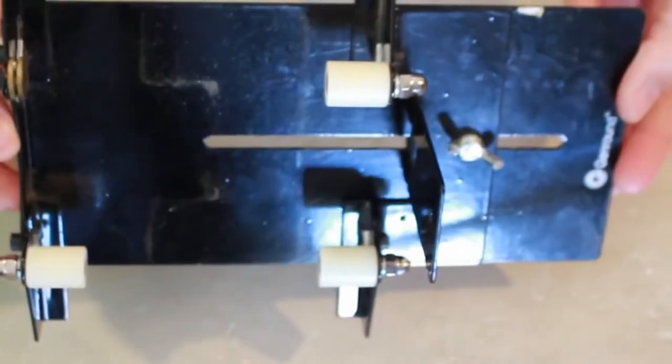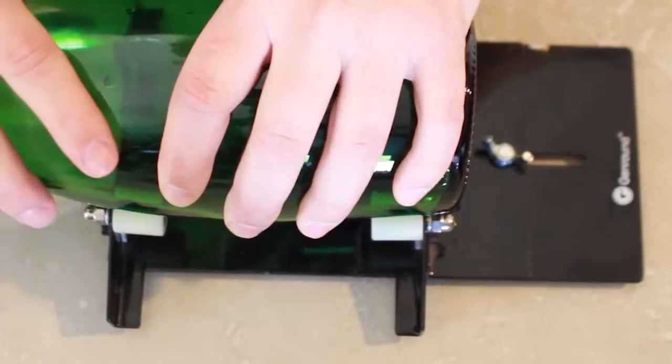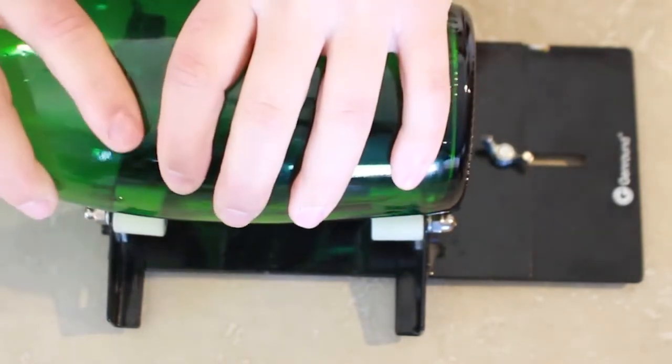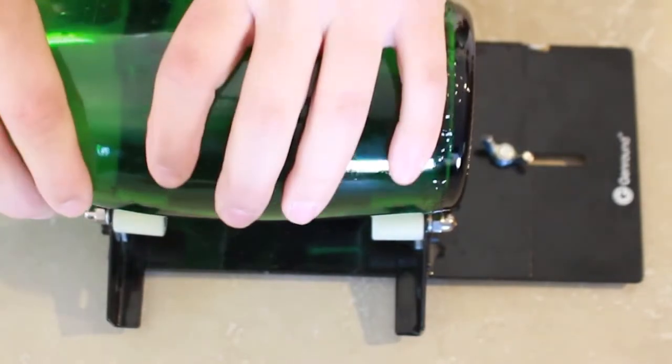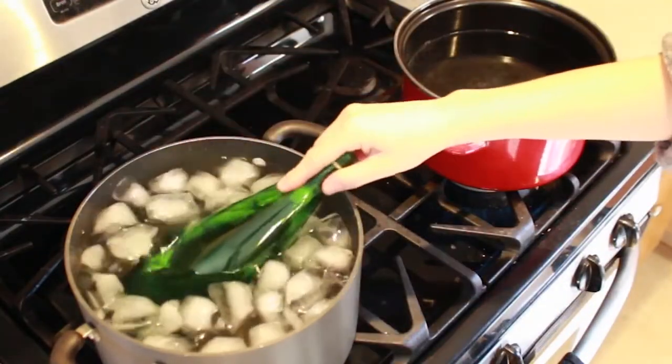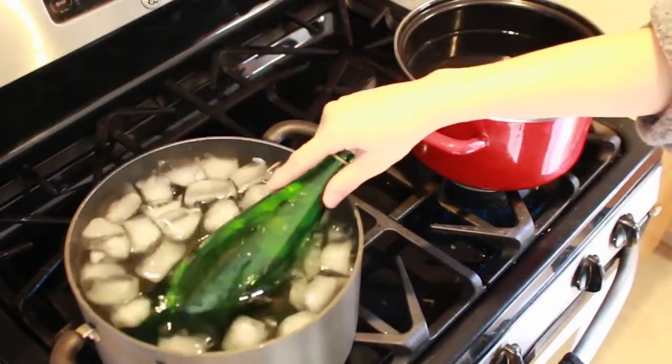For our second project today, we are going to be using this beautiful, vibrant green bottle to create a drinking glass. So again, we're going to be using the glass scorer to create a score line in our bottle and just use consistent kind of firm pressure as you are turning your bottle to create a nice crisp score line. And once you have your score line, you will then alternate in hot and cold water.